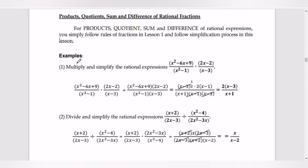The first example applies multiplication of rational fractions. Our task is to multiply and simplify the rational expressions x squared minus 6x plus 9 divided by x squared minus 1, times 2x minus 2 divided by x minus 3. The basic rule in multiplication is to multiply numerator by numerator and denominator by denominator, giving us x squared minus 6x plus 9 times 2x minus 2, divided by x squared minus 1 times x minus 3.